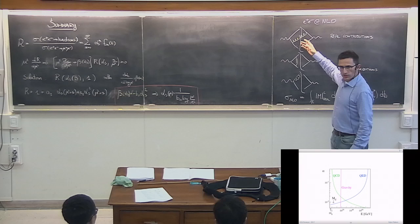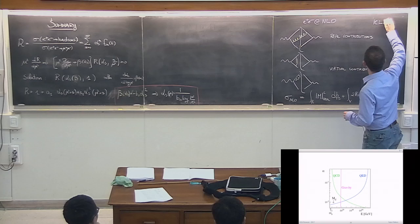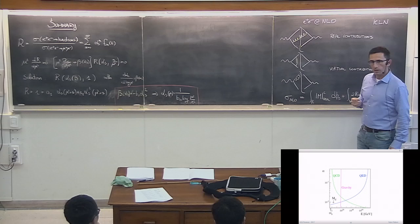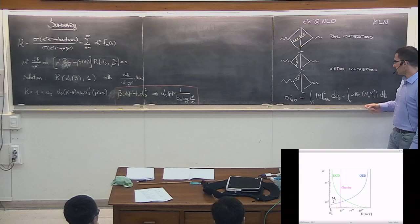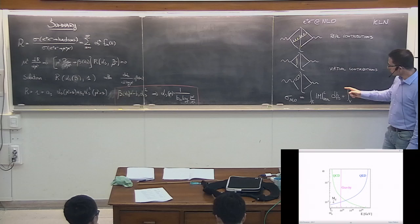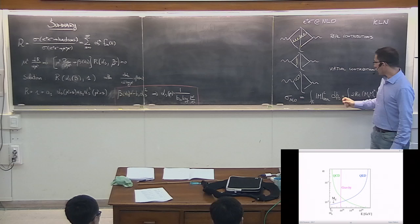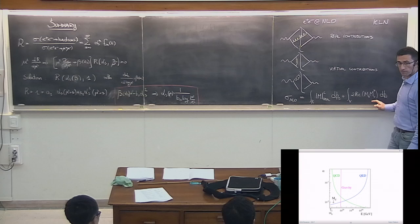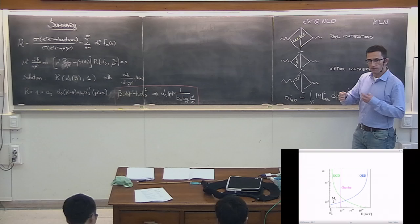For total cross-sections — fully inclusive observables — there is the KLN theorem, which guarantees that sensitivity to long-distance (infrared) behavior in the calculation cancels if we sum over phase space including both virtual and real contributions. The theorem says that if I compute the integral of the real corrections over phase space of three particles inclusively and sum it with the virtual contribution, the result is finite.